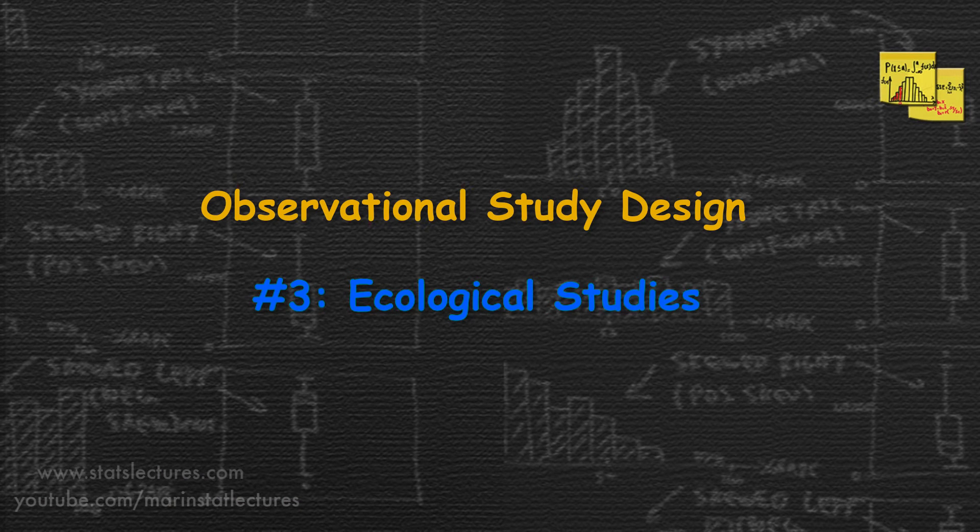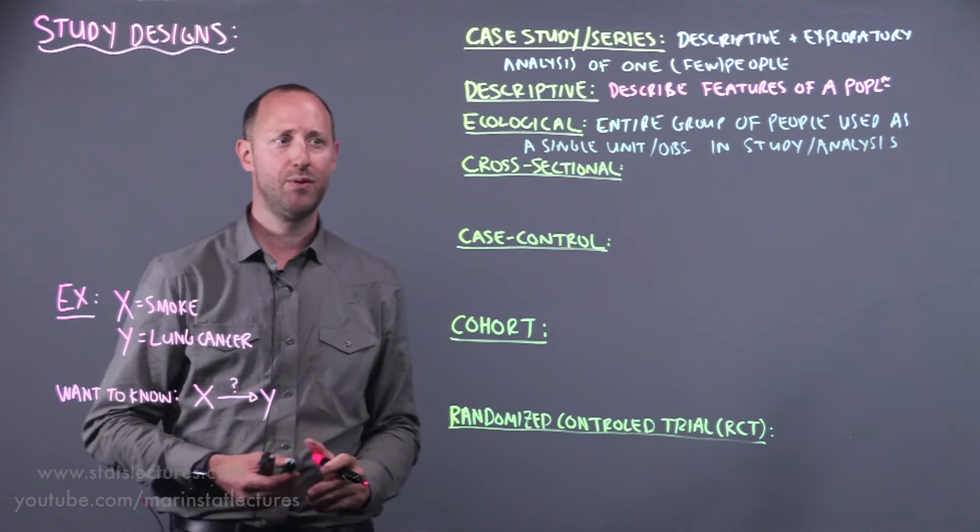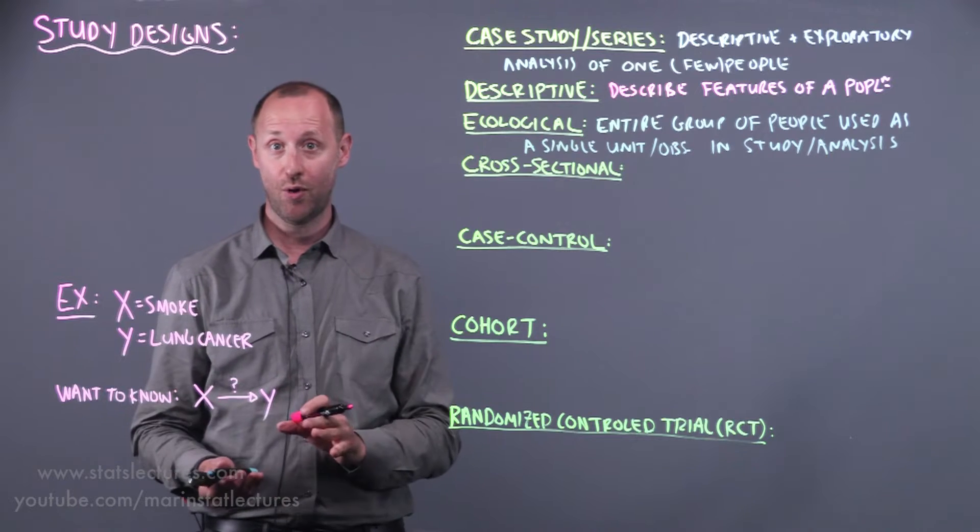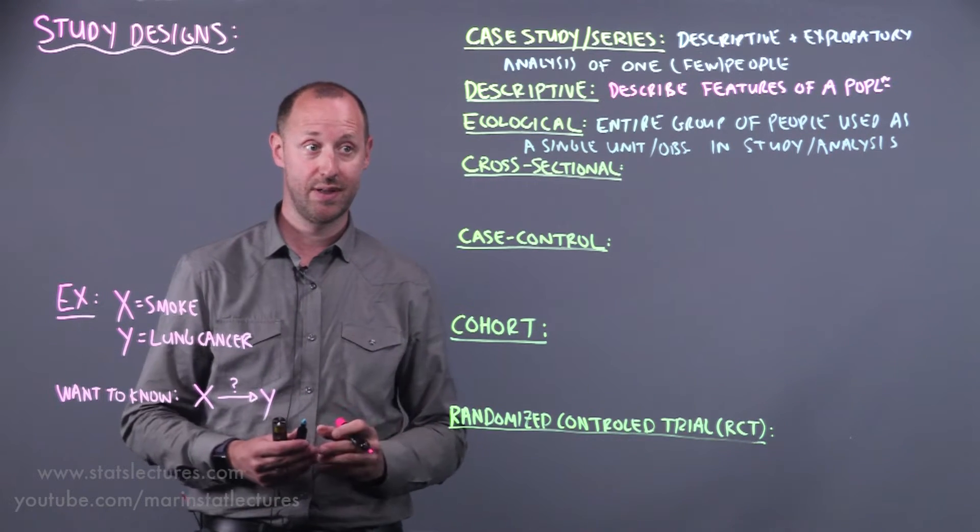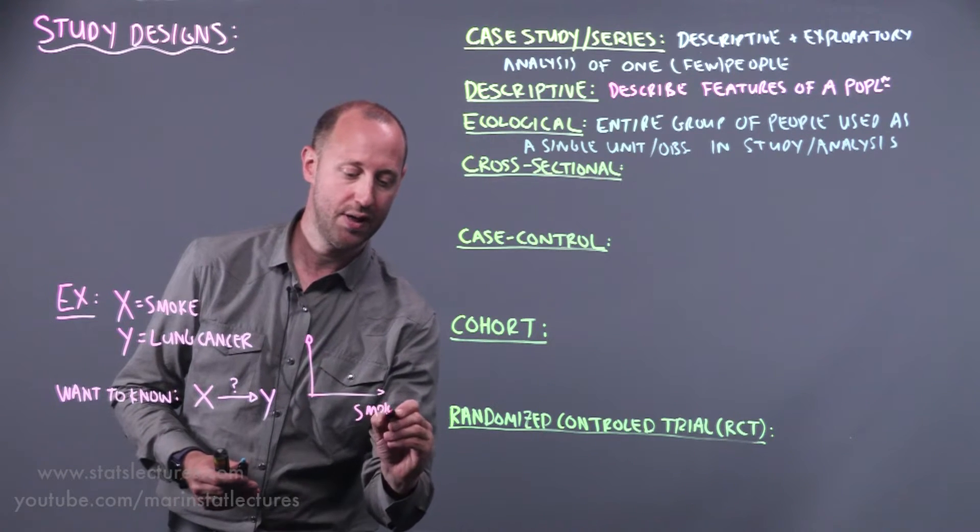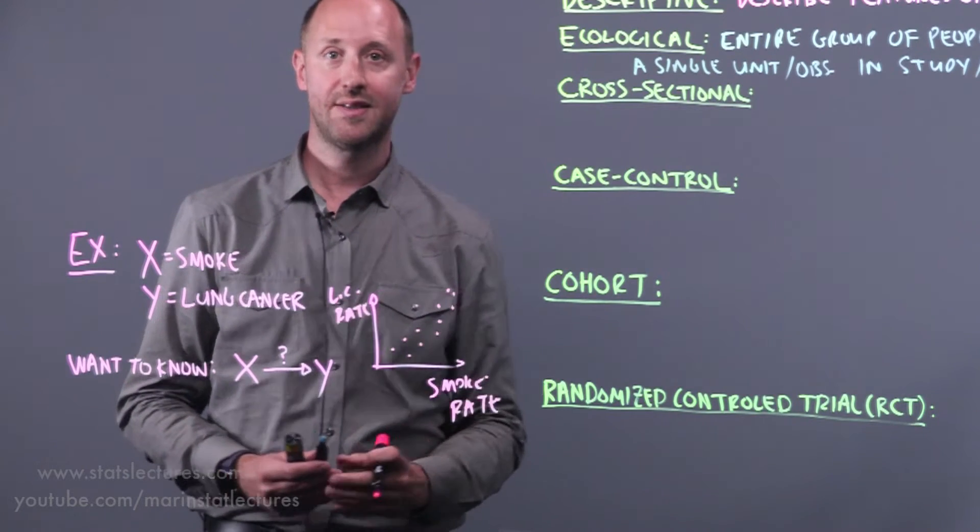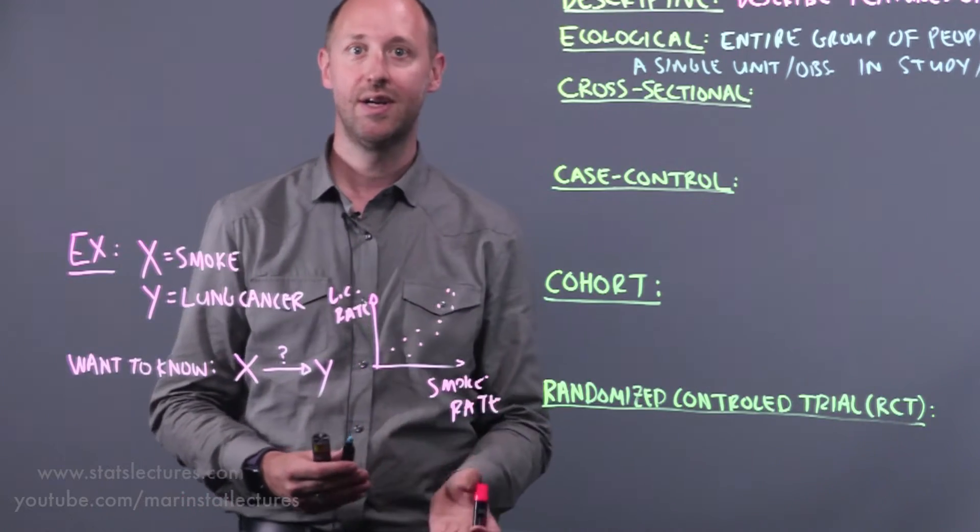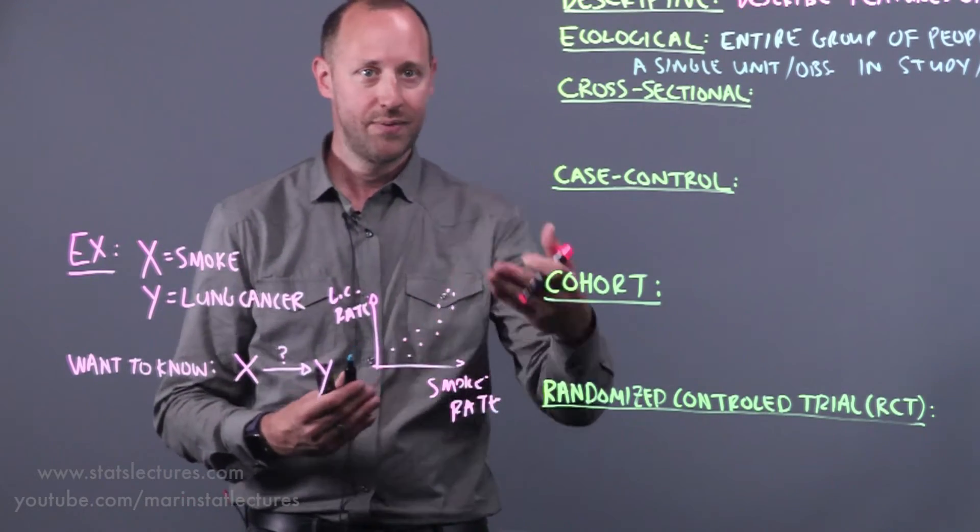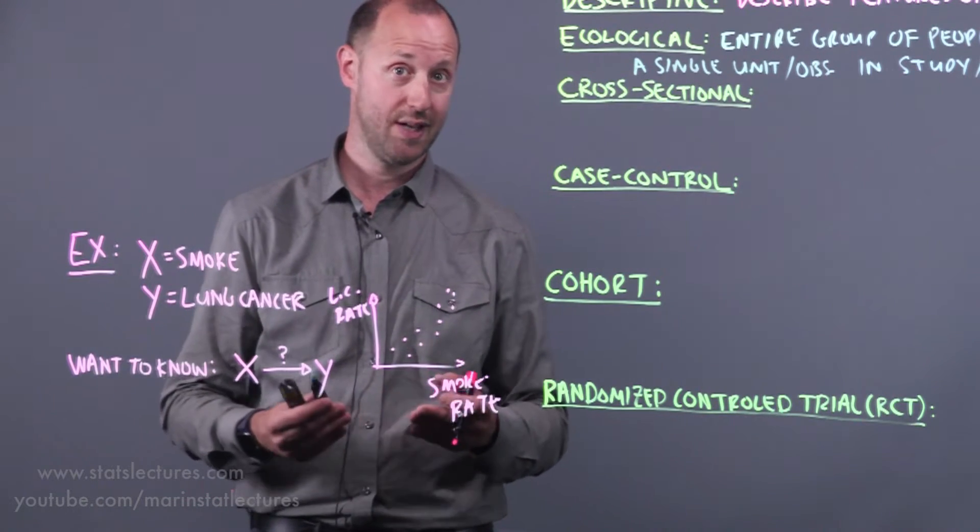Next in the hierarchy is ecological studies, where an entire group of people are used as a single unit or a single observation in the study or analysis. For example, we might look at the smoking rate and the lung cancer rate for an entire country. We might see the smoking rate and lung cancer rate for entire countries and notice that as the smoking rate is higher within the country, the lung cancer rate is also higher. This gives us another piece of evidence that the smoking may be linked with an increased risk of lung cancer.